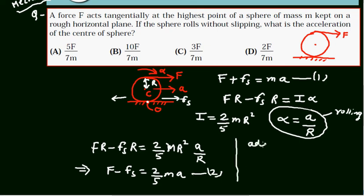Add equation one and two, and we will get 2F equals 7MA/5.